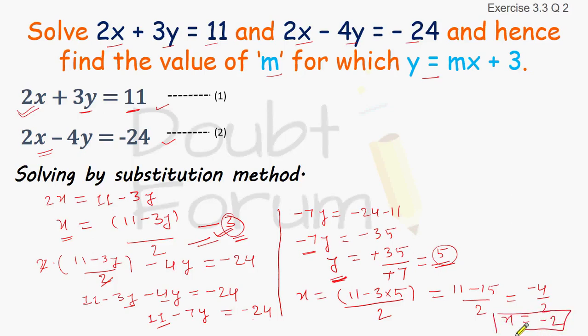We got the value of x. We have both the value of x and y. So we have solved the first part of the question, finding x and y by substitution method. The second part says we have to find the value of m for which y equals mx plus 3 is given.